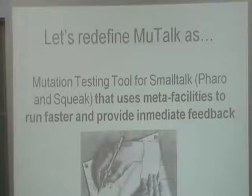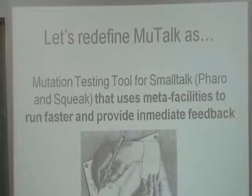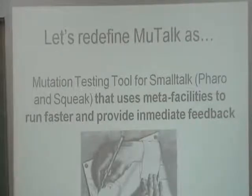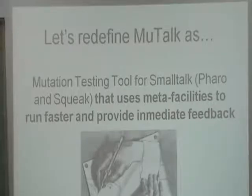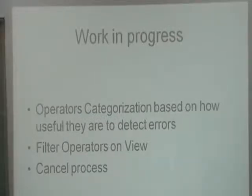I'd describe Mutal as a mutation testing tool that uses Smalltalk's meta-facilities to run faster and provide immediate feedback. It's not just a tool you use in an after-work or static fashion — the idea is that it helps you dynamically improve your tests. And people not used to Smalltalk see this and say 'wow, how easy.' We have some work in progress — the thesis is not finished. One of the things we want to do is categorize the operators by how useful they are, since not all operators detect good errors.